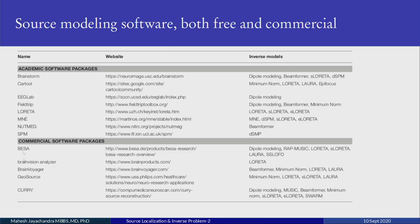As for commercial software, BESA is the most popular. It is a little expensive but considered very good in its field. There is also Curry from Neuroscan, which has a source modeling module.